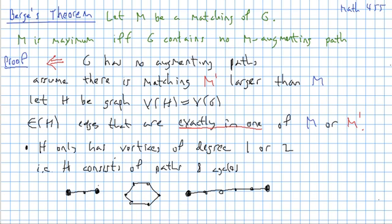And when you have an even cycle, like this hexagon, then half the edges of the hexagon are going to be in M prime, and the other half are going to be in M. And then you can have paths of even length or you might have a path of odd length.